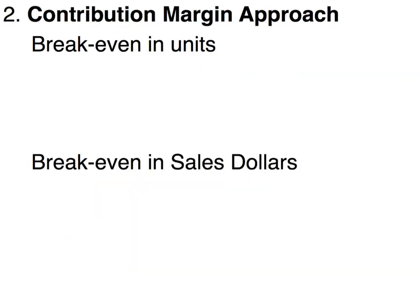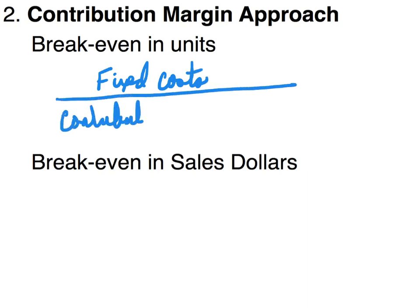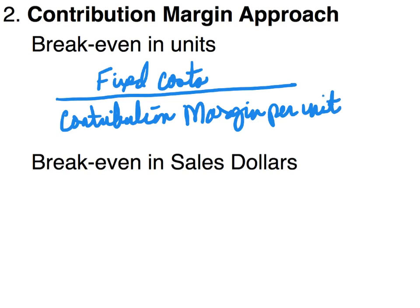The other method is called the contribution margin approach. To calculate break-even in units, we take fixed costs and divide by contribution margin per unit. The key detail here is per unit — if we're looking for units, we divide by contribution margin per unit.